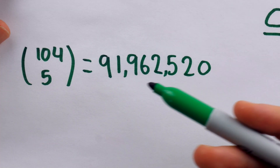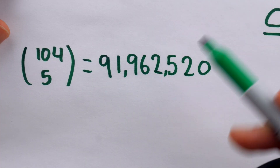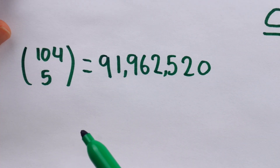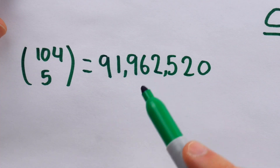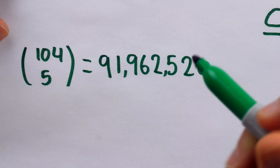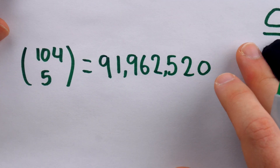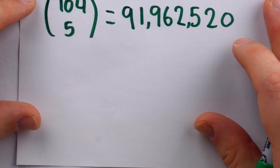If we suppose the jackpot pays out 50 million dollars, then we see that for the small price of 92 million dollars, you can lose 40 million. Pretty cool lottery.